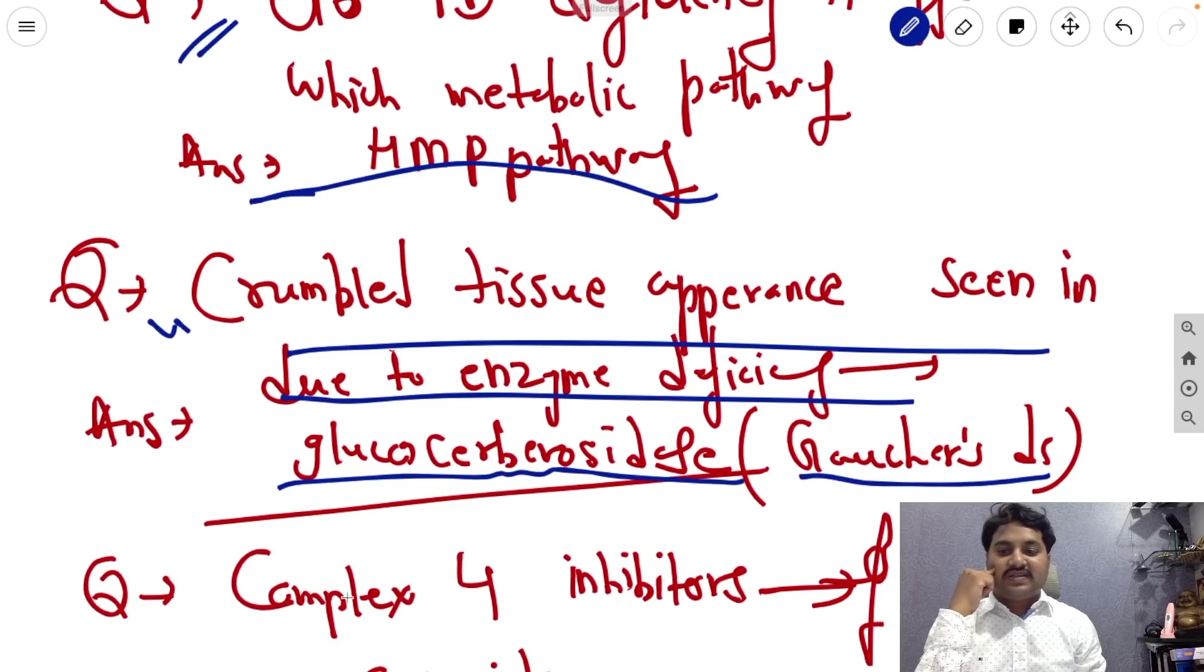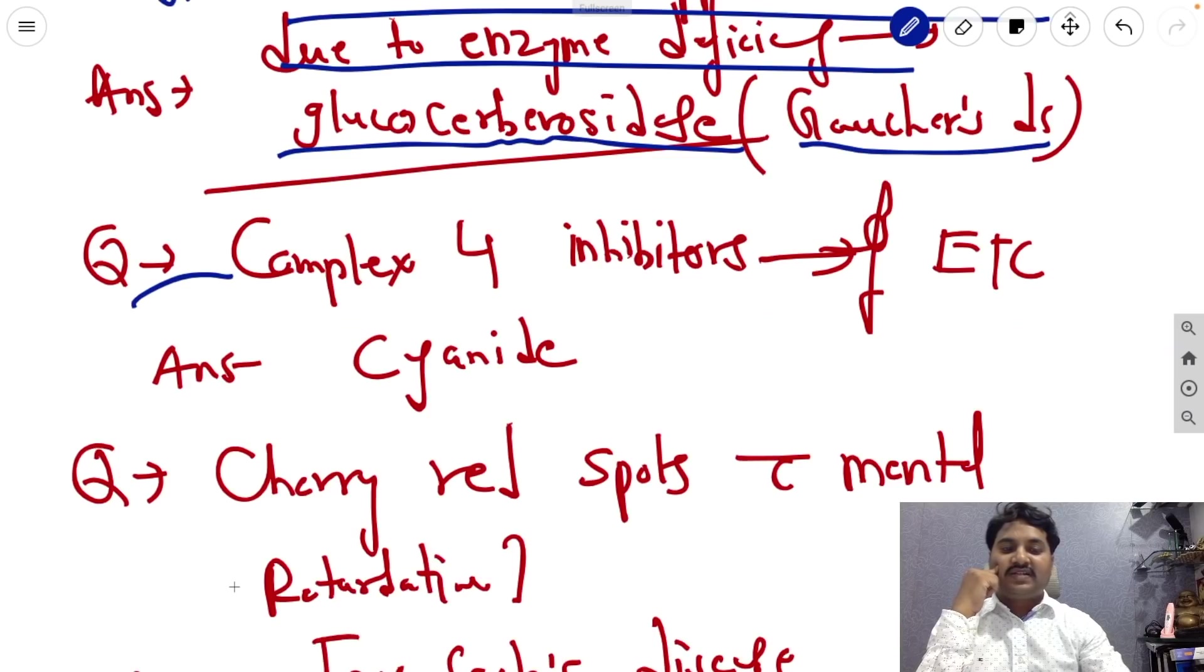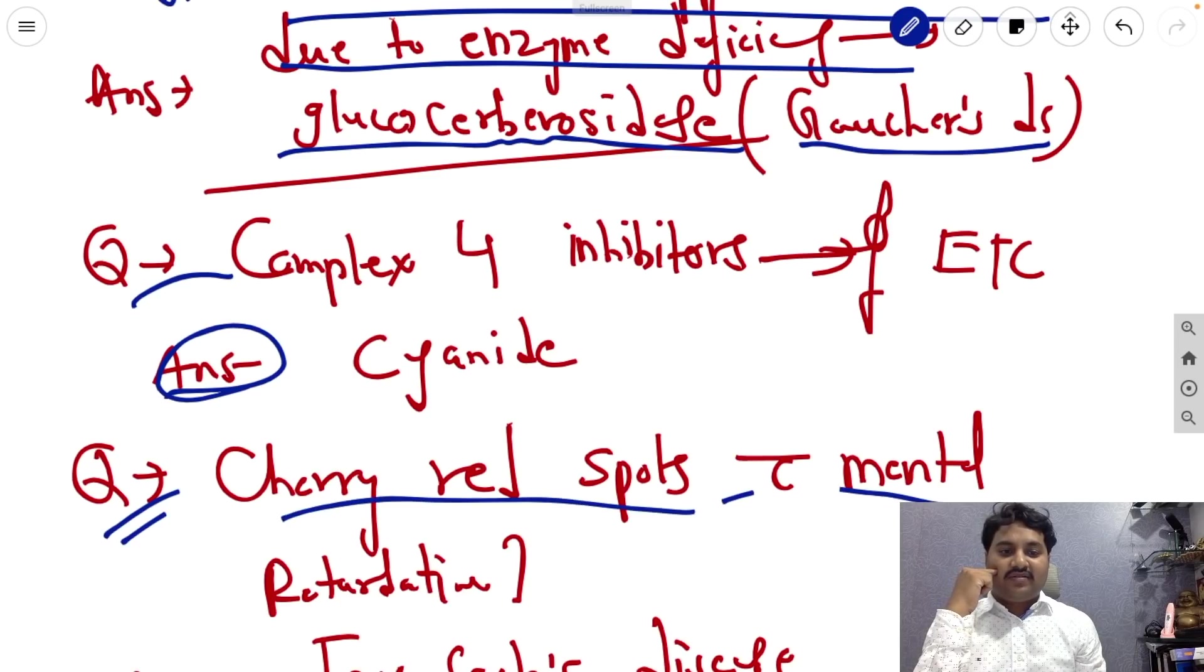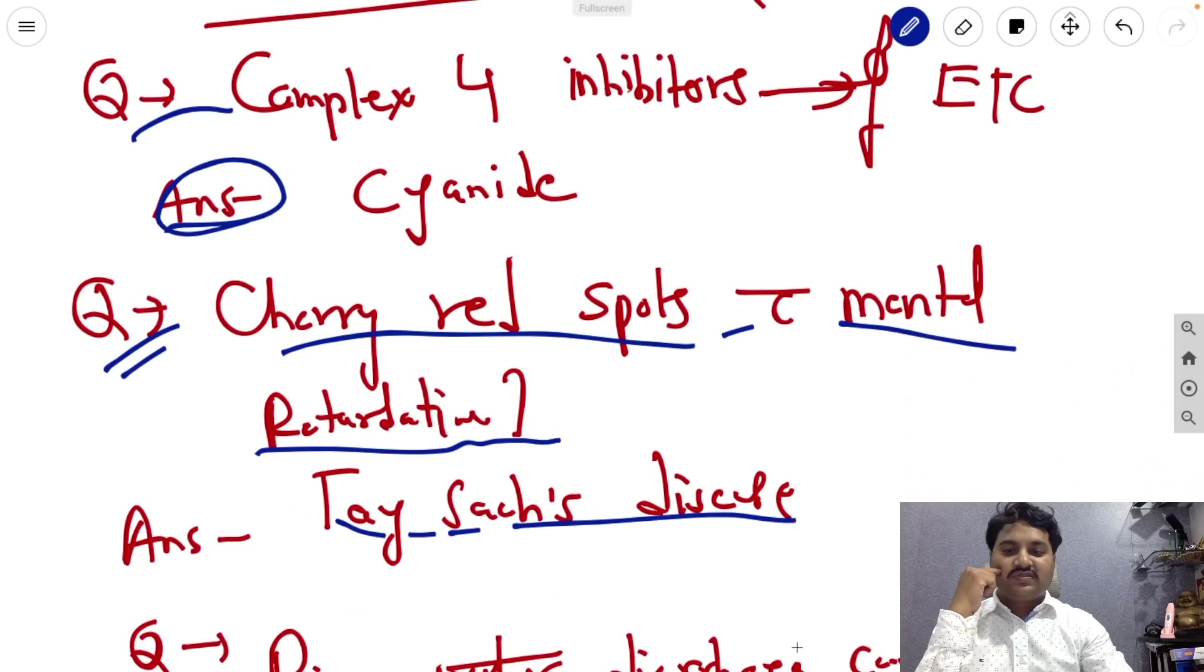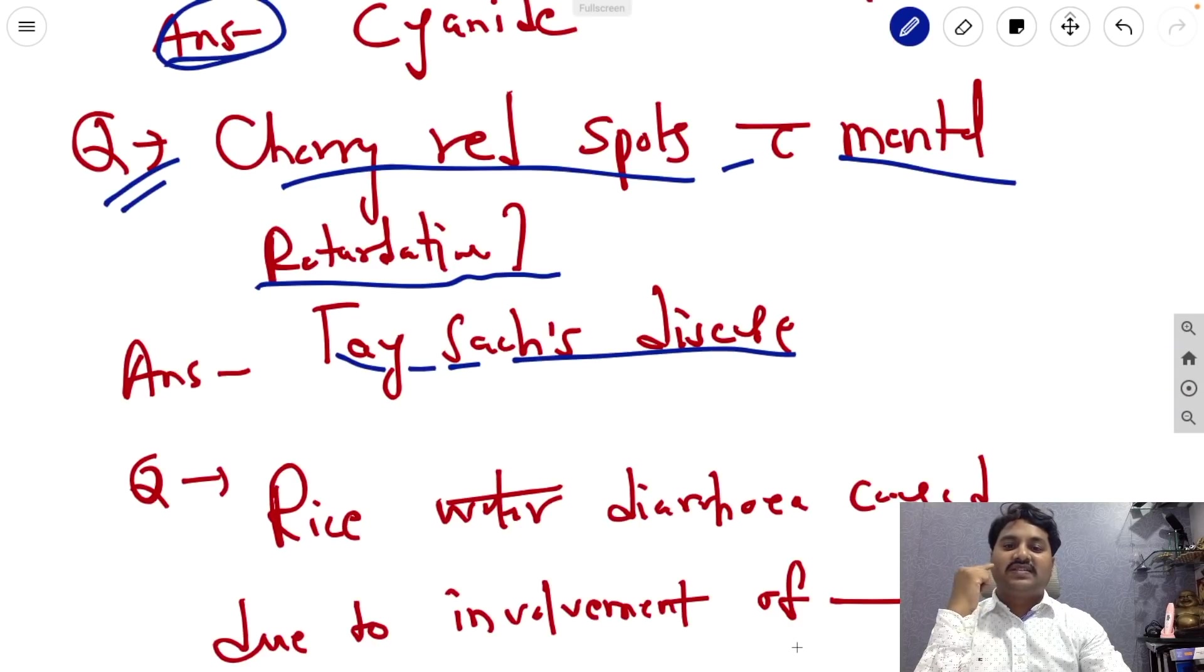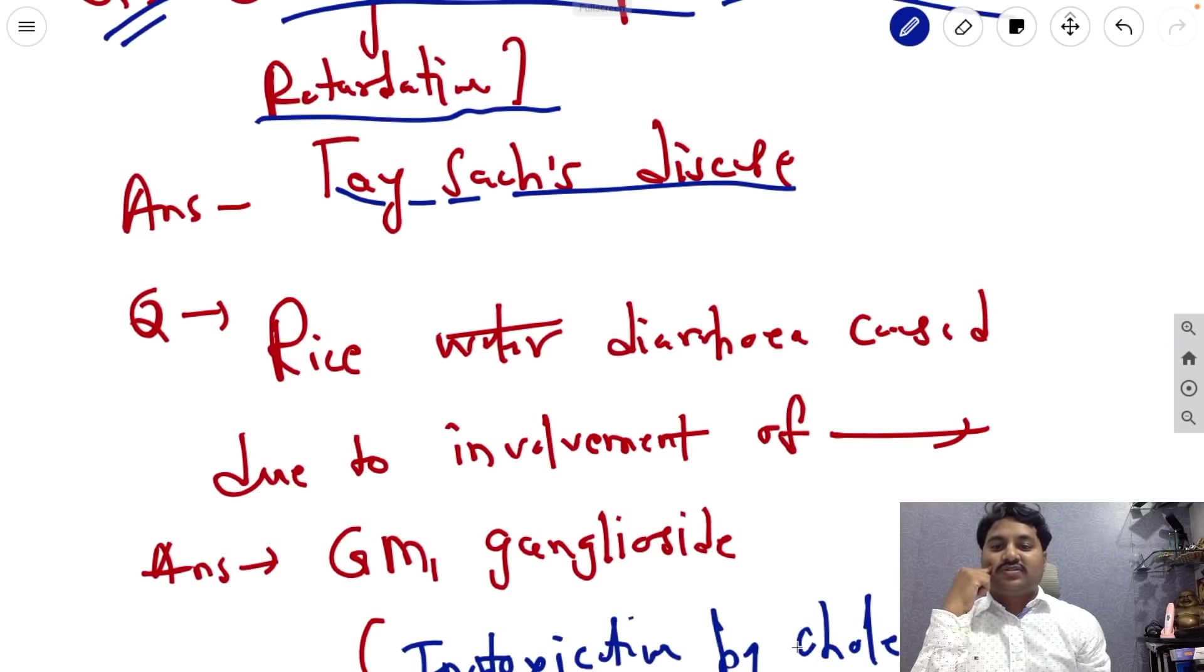Next question, complex four inhibitors of ETC, that is electron transport chain, answer is cyanides. These are also some one-liners which were asked in the examination.